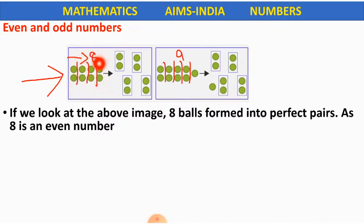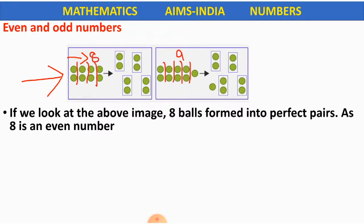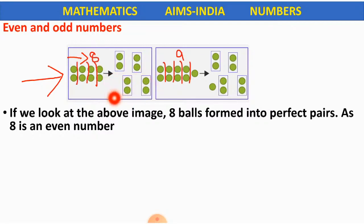Yes or no, children? There are 8 balls and these are divided into groups of 2. Groups of 2 means perfect pairs. What is a pair? When we say a pair of shoes, we mean 2 shoes. In the same way, these balls form pairs — we can group them into 2. These 8 balls can be formed into groups or pairs, and there is no ball remaining. So these are called perfect pairs.